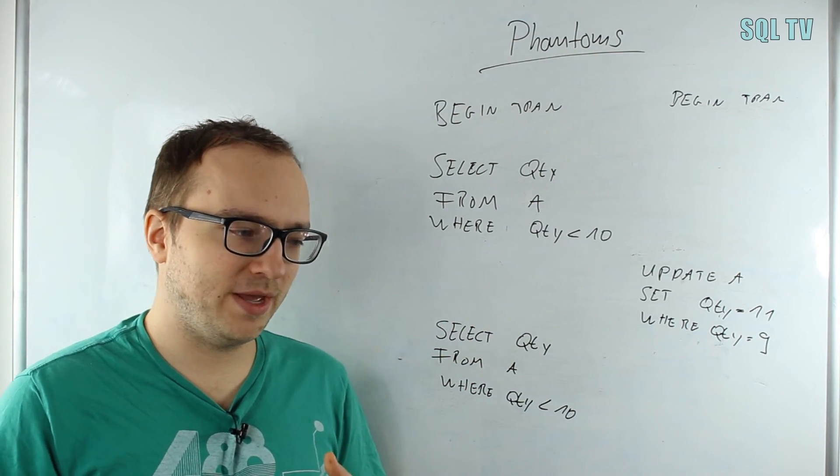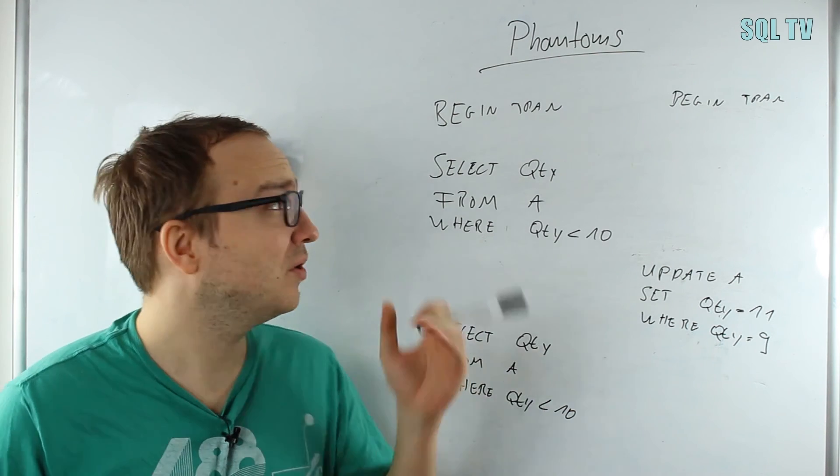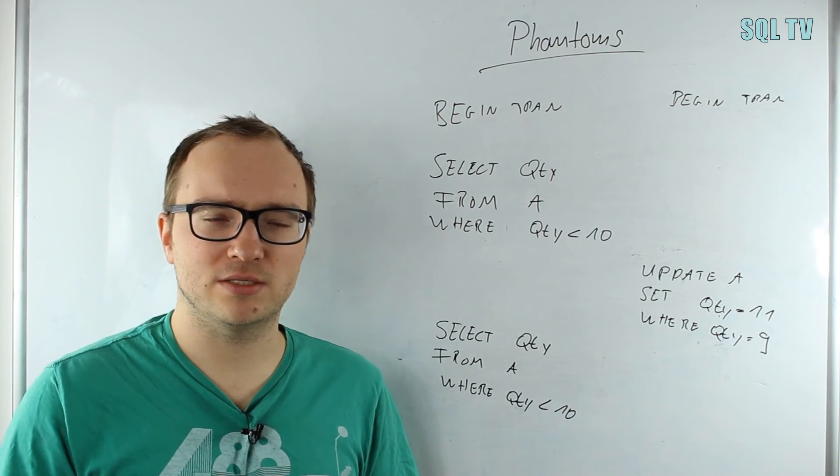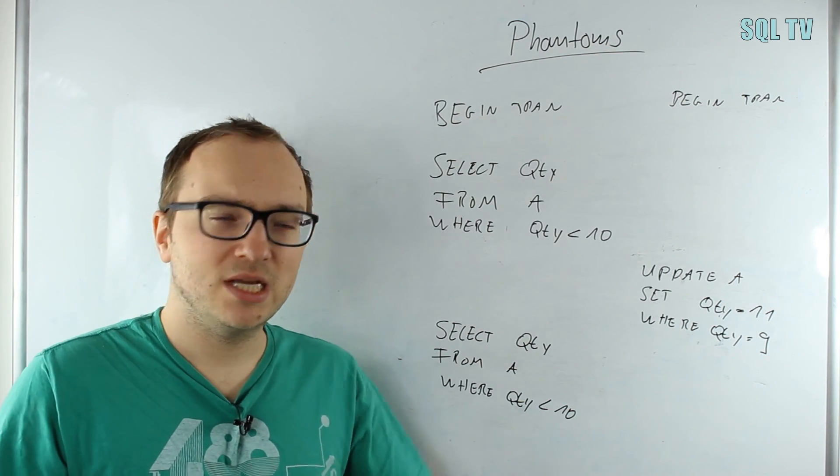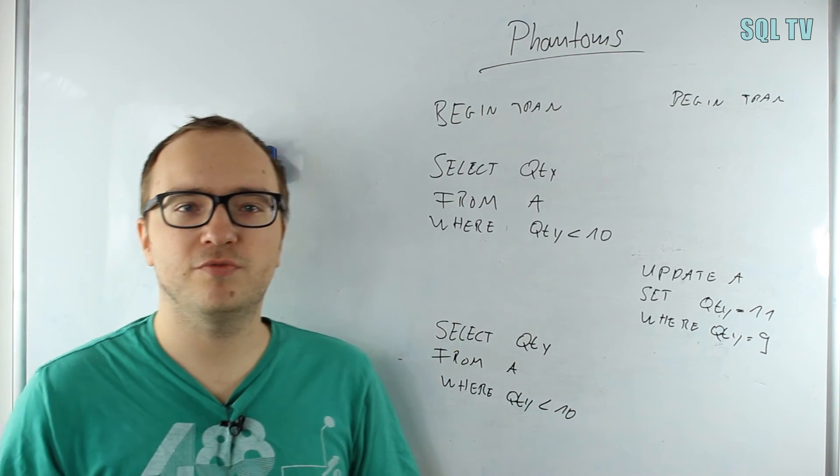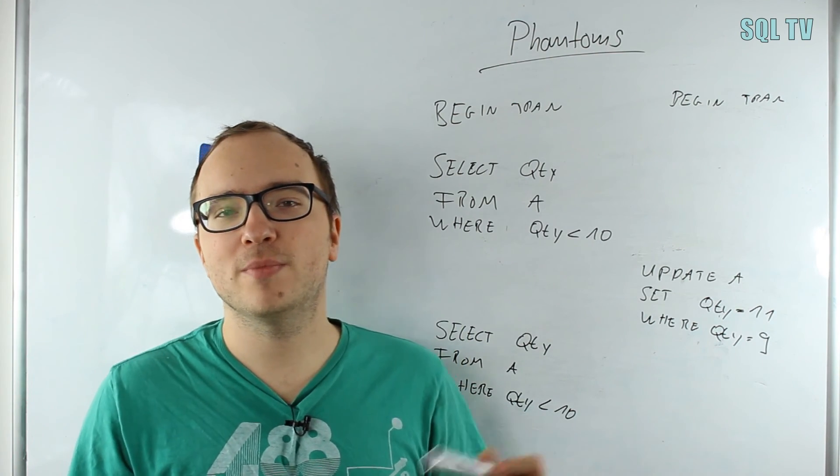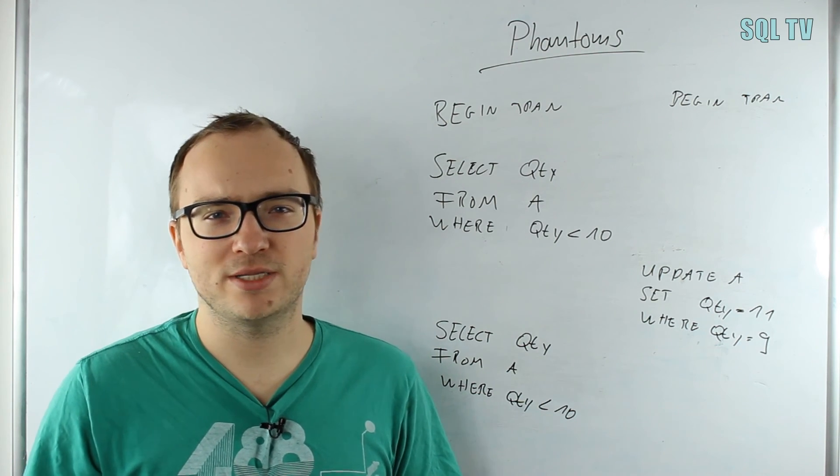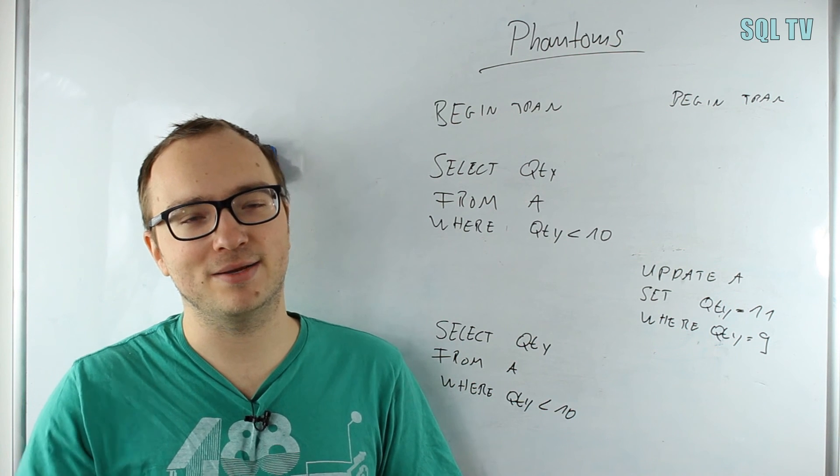Those were all of the problems we have for transactions. The lost update cannot actually happen in SQL Server, but all of the others can happen depending on your transaction isolation level. This will be the topic for next week. Hope you enjoyed it, please stay tuned for the next episode when we're talking about transaction isolation levels. Leave comments as feedback, follow me on Twitter, spread this video, share with your colleagues, and I hope to see you next week again. Bye!